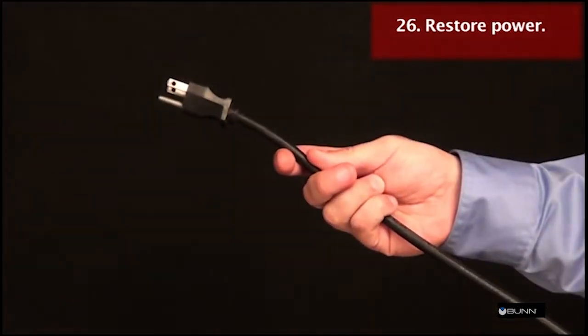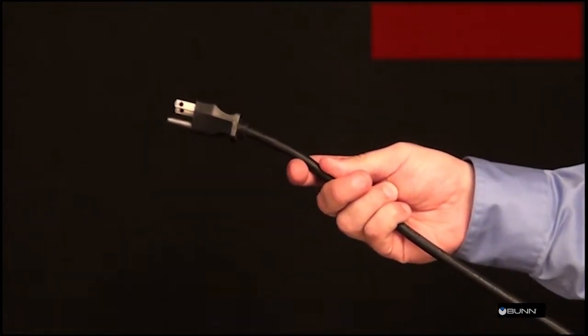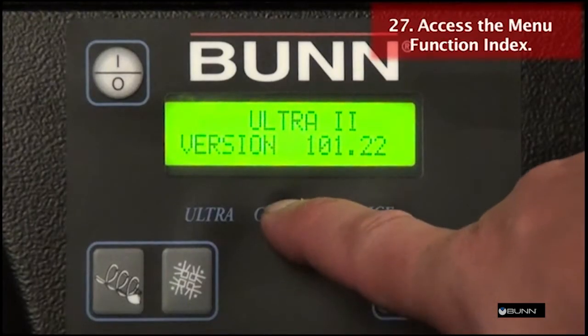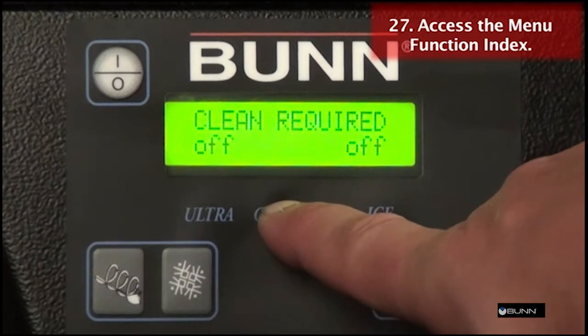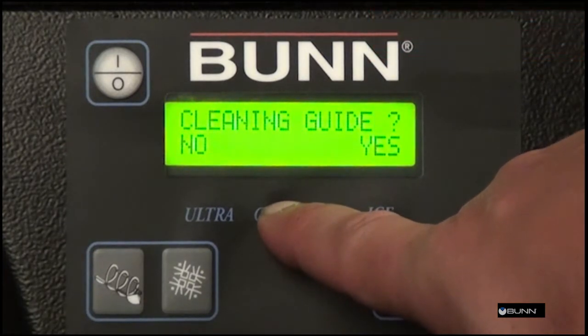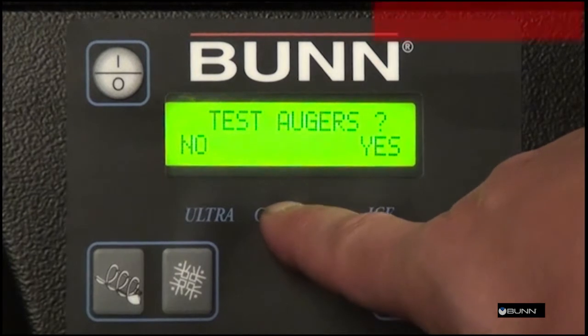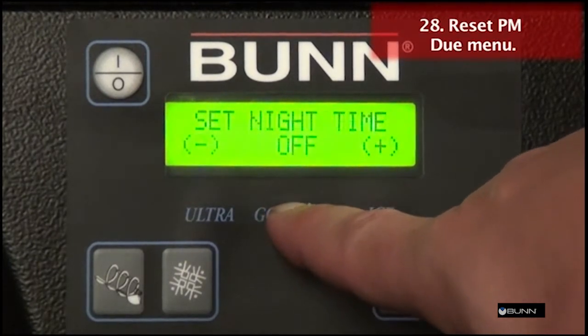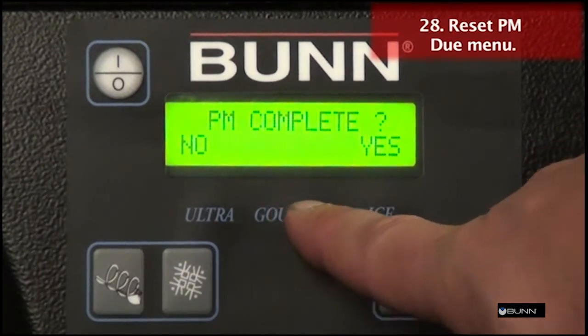Connect to power source. To access the menu function index, press and hold for 5 seconds the gourmet hidden switch. Scroll through the index menus until the PM complete appears. Then select yes.